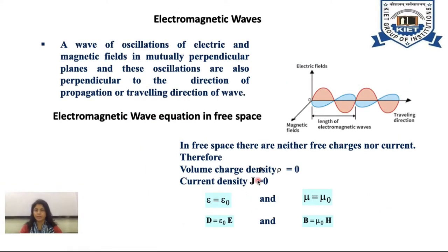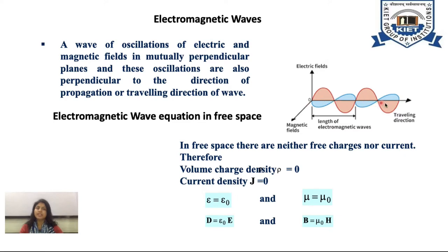What is Electromagnetic Wave? A wave of oscillations of electric and magnetic fields in mutually perpendicular planes, and these oscillations are also perpendicular to the direction of propagation of the wave. This type of wave is known as an Electromagnetic Wave. It consists of an Electric Field Vector and a Magnetic Field Vector, both perpendicular to each other and to the direction of propagation.